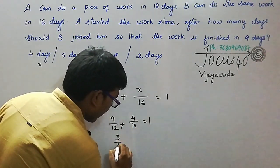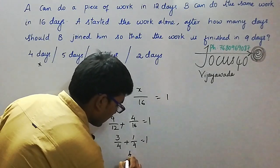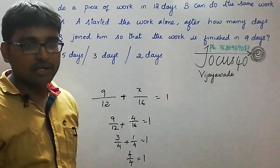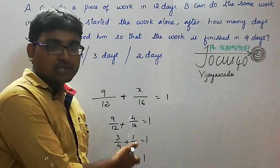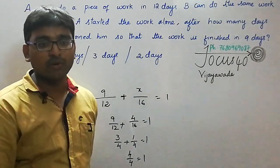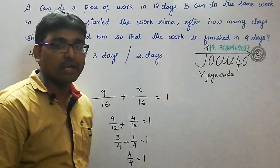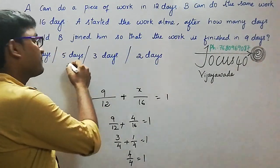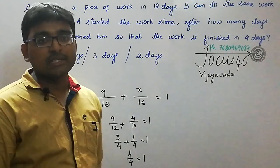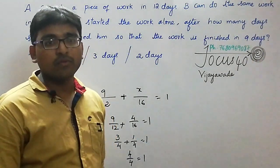For option two — B joined after 5 days — that means B worked for 4 days. Replacing x with 4: 9/12 + 4/16 = 1, which gives 3/4 + 1/4 = 4/4 = 1. The equation is satisfied, so B worked for 4 days and joined the work after 5 days. Our answer is 5 days. By going through these three methods we will get the answer for sure, but in the competitive exam we should go for the shortest method.